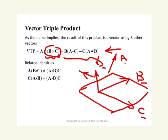There are a couple of identities here. The first: A times (B dot C) is NOT equal to (A dot B) times C. Because B dot C is a scalar, multiplying it by A gives a vector in the direction of A, while A dot B times C gives a vector in the direction of C — completely different vectors. However, C times (A dot B) IS equivalent to (A dot B) times C, because A dot B is a scalar and it doesn't matter whether you multiply it from the left or the right.